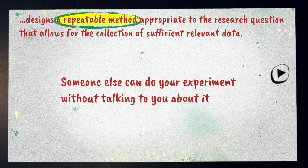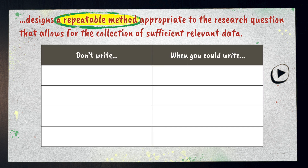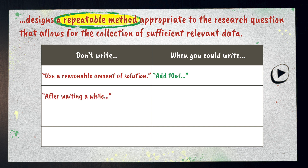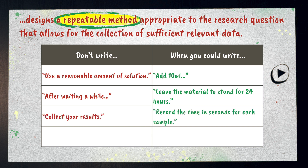You'll know your method is probably repeatable if, after reading your method, someone else can do your experiment without talking to you about it, and if they did the experiment in the same place as you, they would get the same results. For example, don't write 'use a reasonable amount of solution' when you could write 'add 10 milliliters.' Don't write 'after waiting a while' when you could write 'leave the material to stand for 24 hours.' 'Collect your results' is not so good, but 'record the time in seconds for each sample' is better.